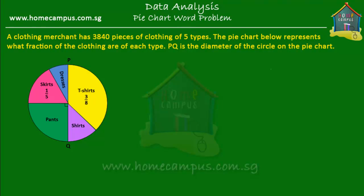Welcome to homecampus.com.sg. Let's solve this word problem on pie charts. A clothing merchant has 3,840 pieces of clothing of five types. The pie chart below represents what fraction of the clothing are of each type.